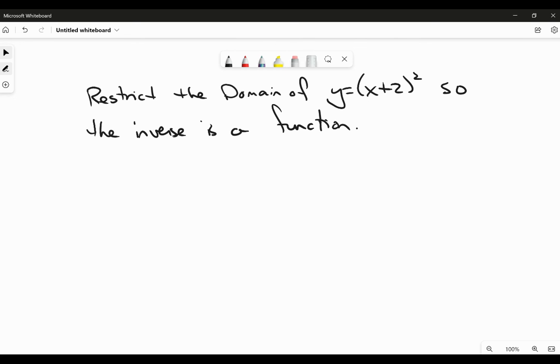Hi everybody. Somebody asked me to go through how to restrict the domain of the function y = (x+2)² so that the inverse is a function.